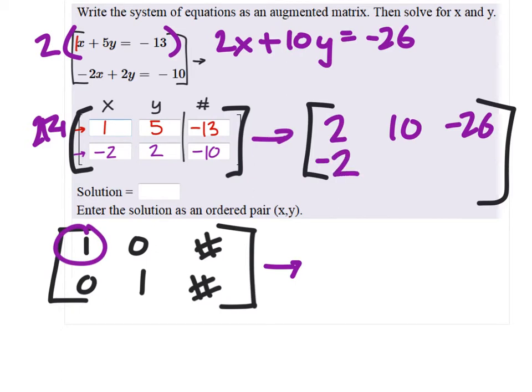So, that gives us two, ten, and negative 26, just like it would if it were elimination, right? We didn't do anything to that bottom row, so it stayed the same. But why did you pick two?